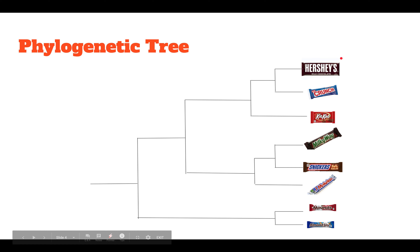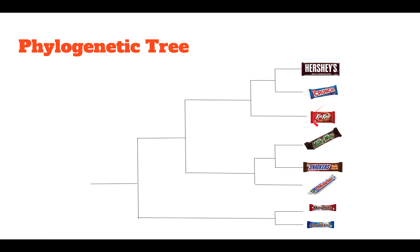We can see how we make these trees by using OTUs, which are just differences between the chocolate bars — the chocolate bars are our species. We can see that the Hershey bars and the Crunch bars are more closely related, so their OTU would be a smaller number. The KitKat is at that same level but is an outgroup, because its common ancestor is on this internal node, and it's more closely related to those two than to the others, but not as closely related as Hershey's and Crunch are to each other.